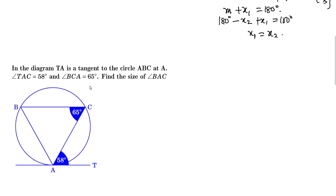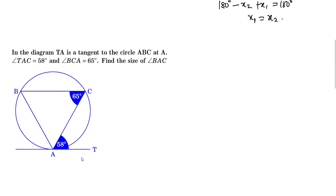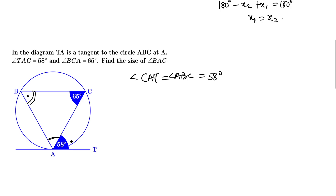Now let's look at one example. We're told that TA is a tangent to circle ABC at A, angle TAC is 58 degrees, and angle BCA is 65 degrees. We need to find the size of angle BAC. By the alternate segment theorem, angle ABC equals angle TAC, which is 58 degrees — these are angles in alternate segments.